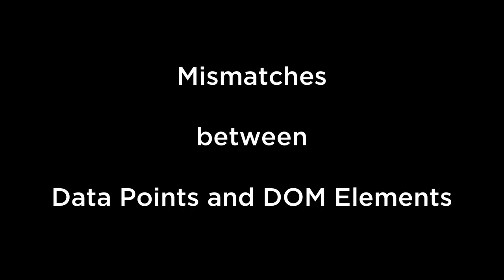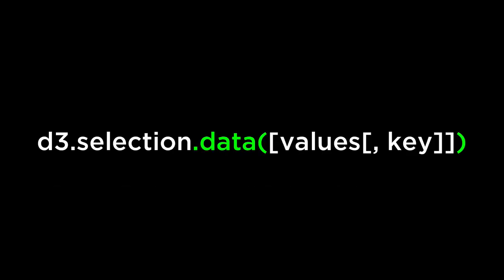So far we have covered how data attaches a data point to a DOM element, and what happens if we have more than one data point and more than one DOM element. Now we cover what happens if we have a mismatch between data points and DOM elements — that is, what if we only have one data point and many DOM elements, or the other way around: what if we have more than one data point and only one DOM element?